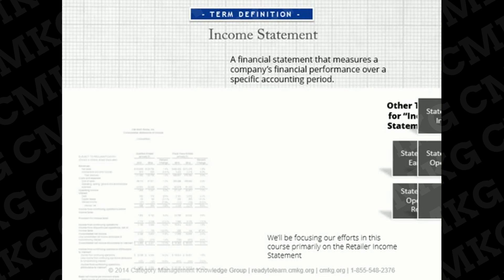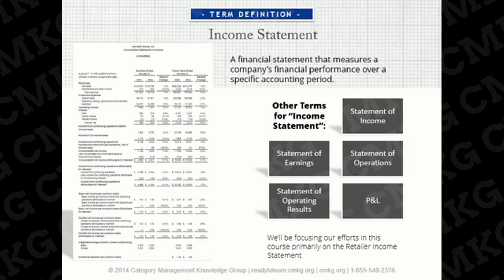Here's an example of an income statement from Walmart. Income statements may come with various terms. The most commonly used are statement of income, statement of earnings, statement of operations, and statement of operating results. Many professionals still use the term P&L, which stands for profit and loss statement, but this term is seldom found in print these days. The terms profits, earnings, and income all mean the same thing and are used interchangeably.